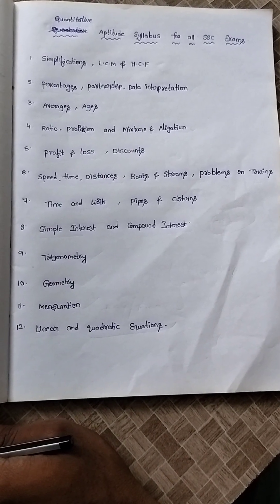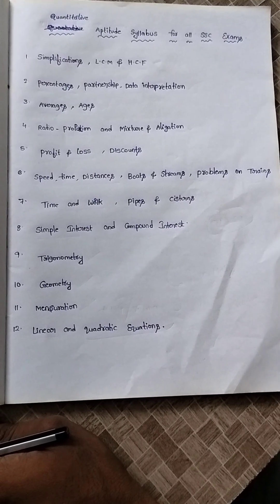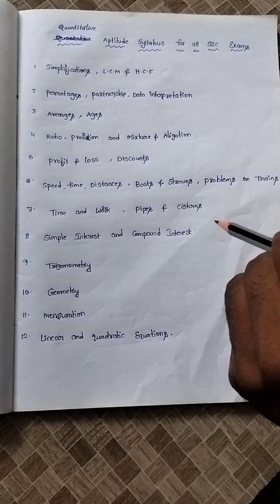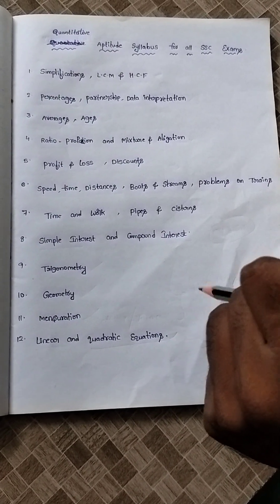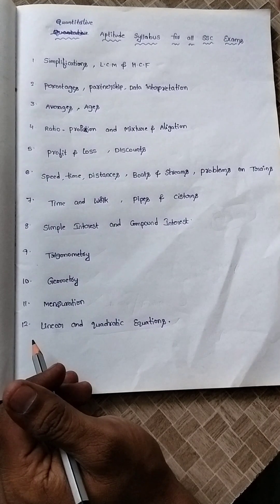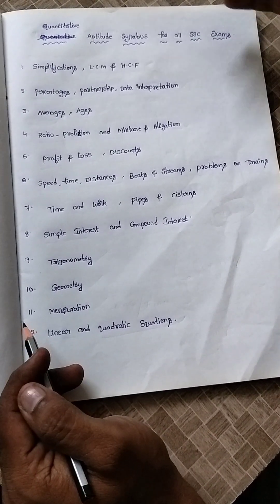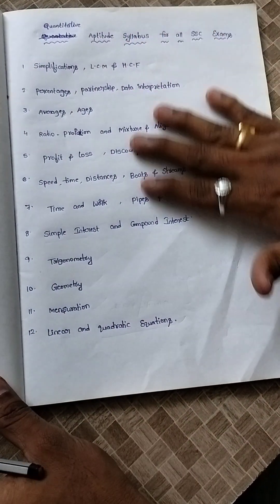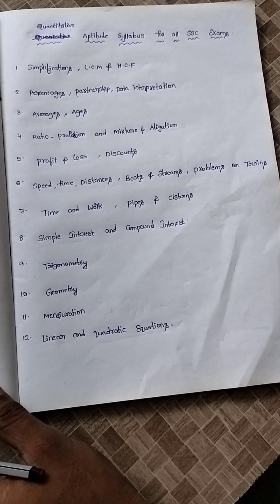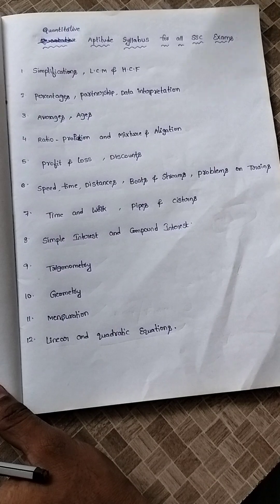Hi friends, myself Madhu, teaching in Quantitative Aptitude. This is the Quantitative Aptitude syllabus for all types of SSC exams like CGL, CHSL, Phase 2, MTS. SSC means Staff Selection Commission. These are the topics we have taken from the last 5 to 10 years of previous papers. We gathered and analyzed how many questions are coming from most of these topics.